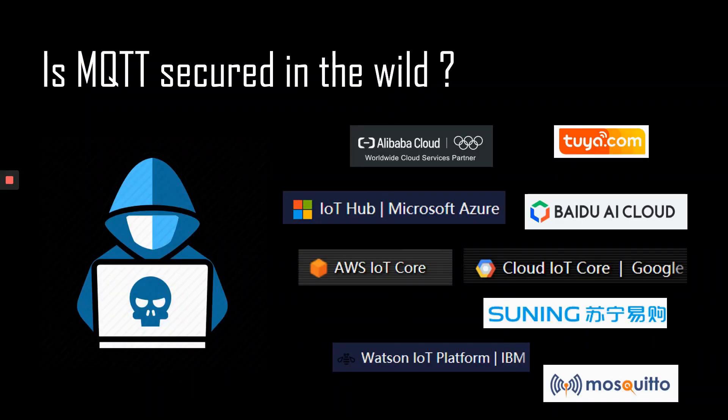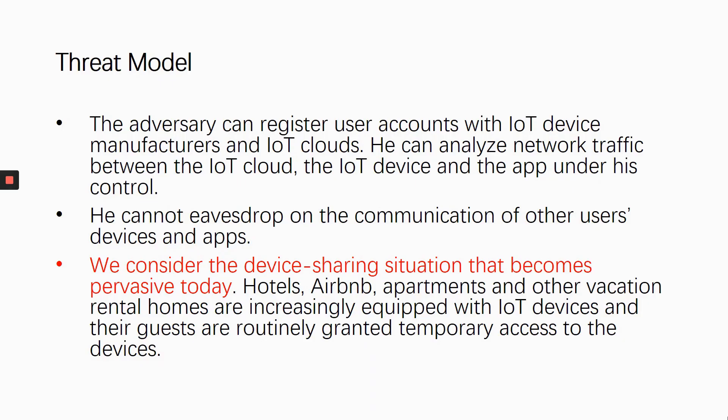However, given the complexity in customizing the general purpose protocol to work in diverse IoT application scenarios, effective protection of its communication is challenging. We did a systematic security study on eight leading IoT clouds in the world that use MQTT. We believe the attacker can register user accounts with IoT device manufacturers and IoT clouds. Sometimes the attacker can be granted temporary access to devices — for example, in hotels equipped with IoT devices where different guests may share the same smart lock.